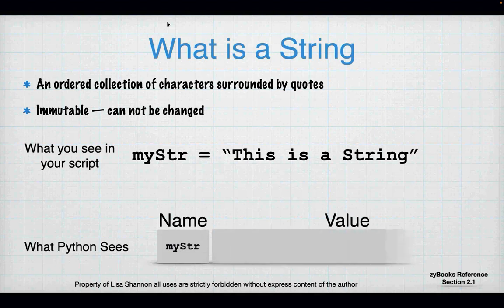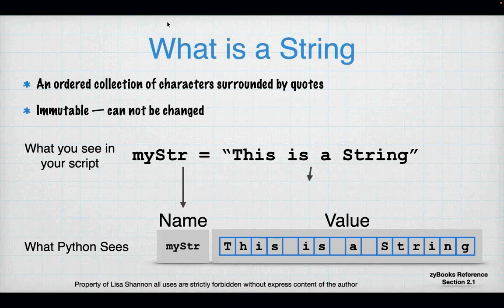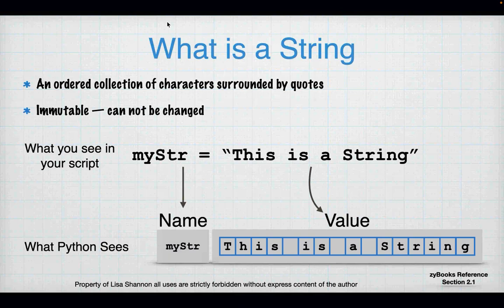What Python sees is the name of the variable, which is Meister, and a value which is an individual set of characters in a specific order. Notice when you look at those little blocks at the bottom of the page, you will see a block for each space — that's because a space is considered a character in a Python string. There are lots of invisible characters, and a space is one of them — it's an invisible character that is actually considered a character to a programming language.